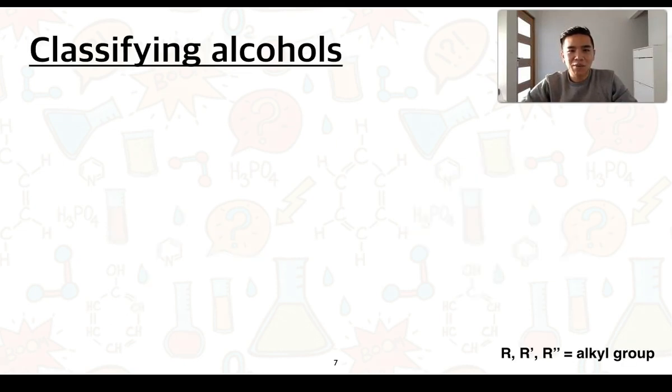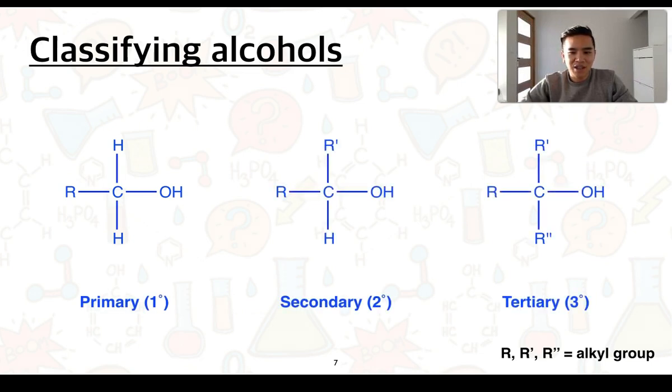Next we're going to consider how we can classify alcohols. There are essentially three different types of alcohols. Firstly we have what we call primary alcohols. We have secondary as well as tertiary and to understand the difference between them you have to look at the carbon which is bonded to the hydroxyl group.